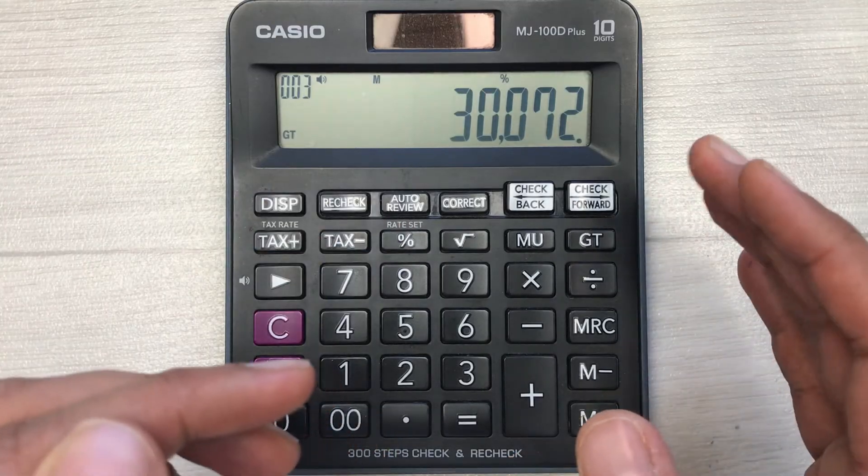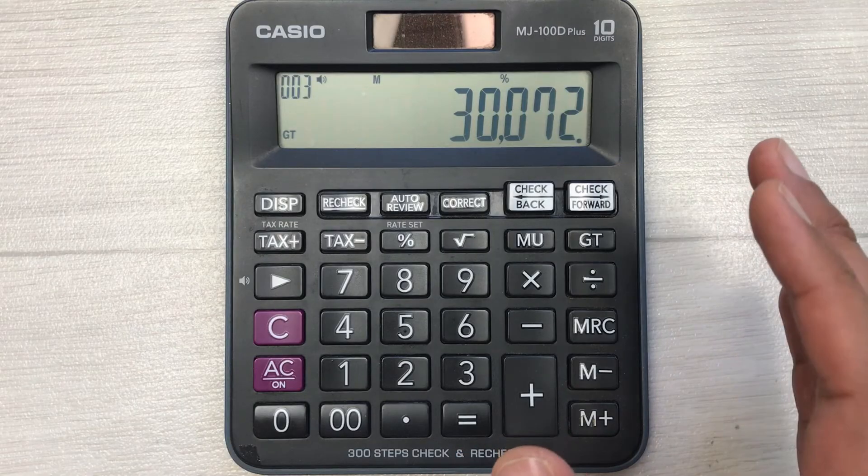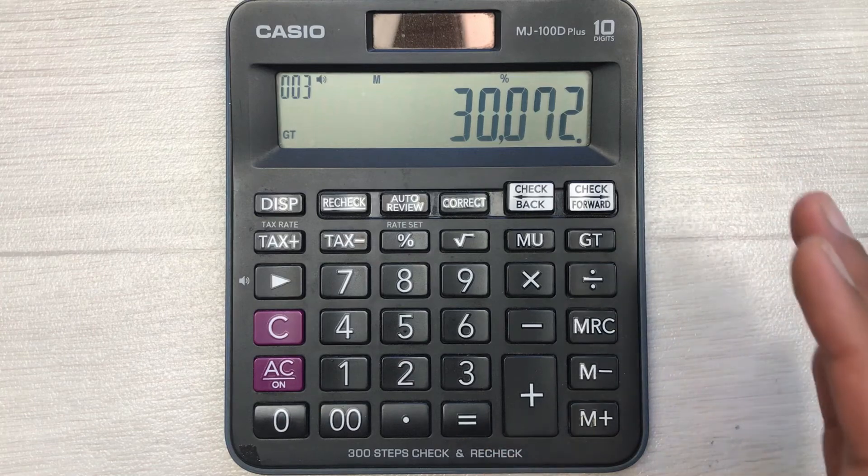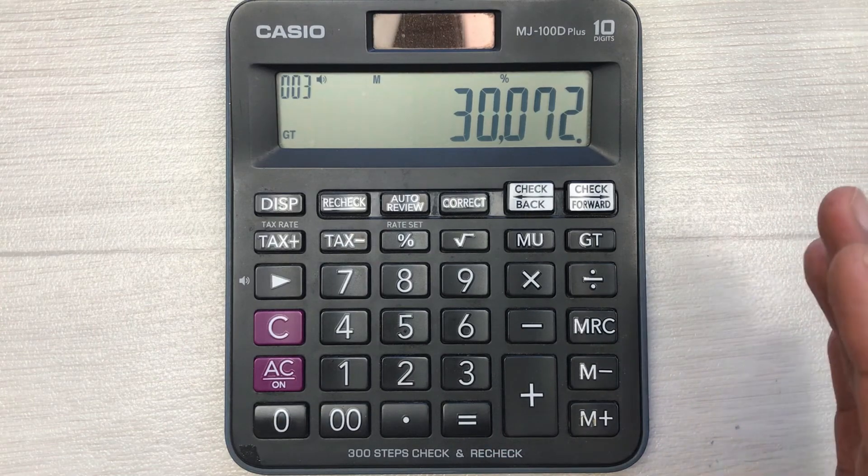So this is the final answer. After 30% discount, you have to pay $30,072. This is how you can find out the 30% discount on your calculator.